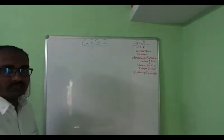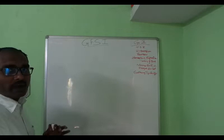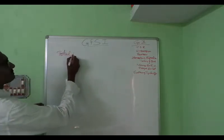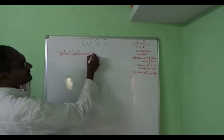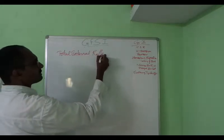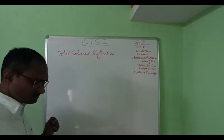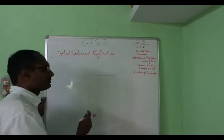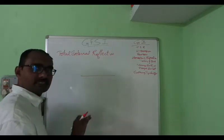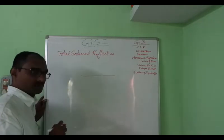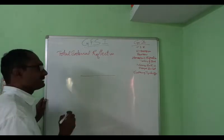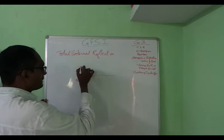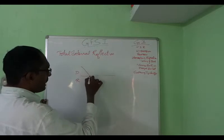Before going into the topic, I would like to introduce a small part called total internal reflection. We know that whenever a light ray is traveling from a rarer medium to a denser medium, it bends towards the normal. On the other hand, if the light ray is traveling from a denser medium to a rarer medium, the light ray would bend away from the normal.